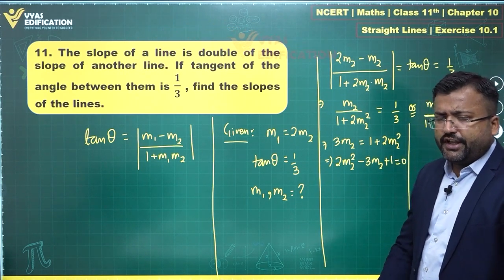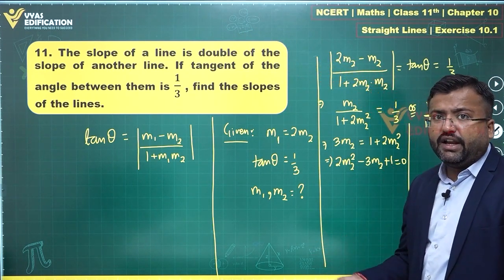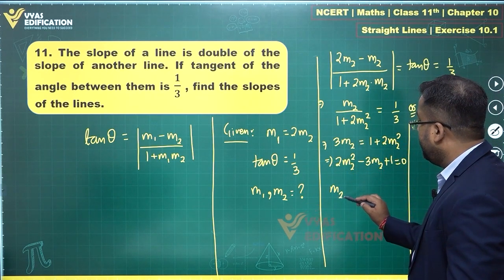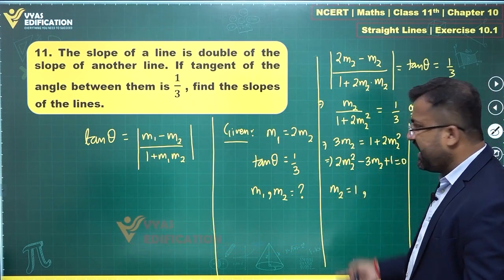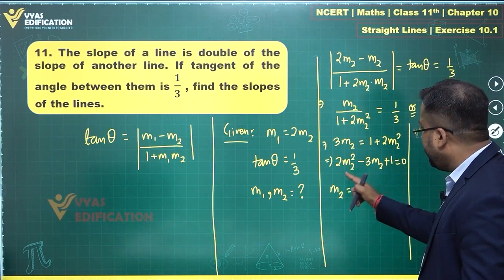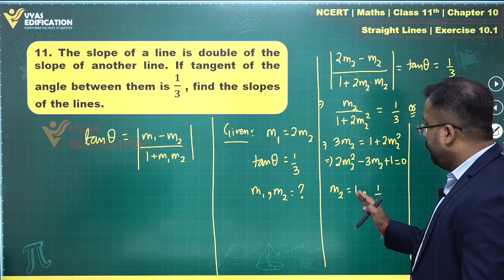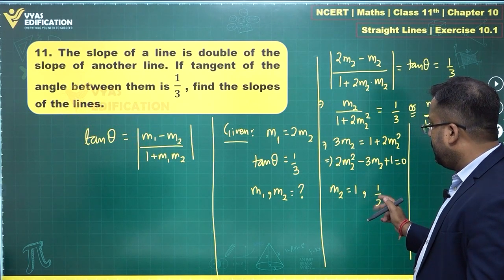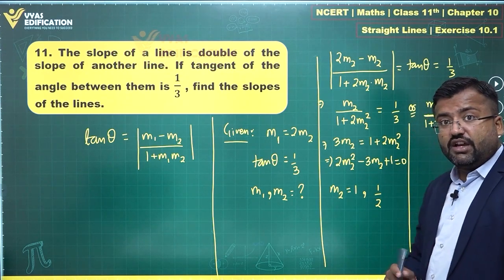This gives me 3M2 will be equal to 1 plus 2M2 square or this tells me 2M2 square minus 3M2 plus 1 is equal to 0. Using concepts of quadratic or simple factorization, you see that 2 minus 3 plus 1 is 0. So substituting M2 is equal to 1 will give me a 0. M2 is equal to 1 is a solution. And the other solution can be found by using C by A, 1 by 2. M2 is equal to 1 or 1 by 2.